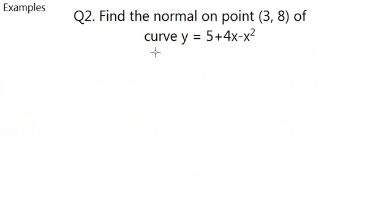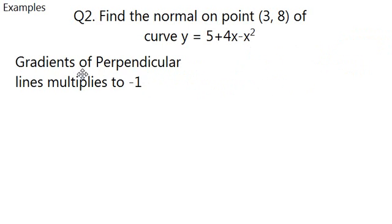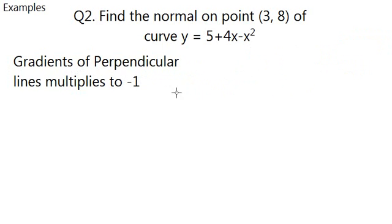Now we're going to do normals. That's generally the same as doing tangents. Instead, you have another step - it's to use the knowledge that perpendicular lines multiply to negative 1, or negative 1 divides one of them will make the other gradient. That sounds a bit complicated, but it's not really that complicated. First of all, find the gradient function as we do, which is 4 minus 2x.